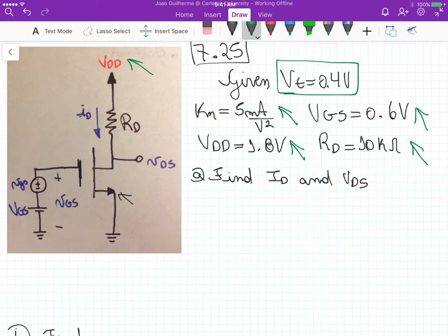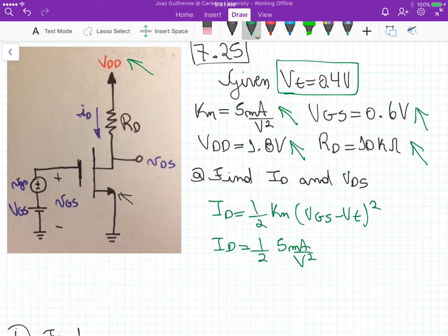Part A asks us to find ID and VDS. For ID, we know that ID equals one-half the device transconductance times the overdrive voltage, VGS minus VT, squared. This gives us ID equals 0.5 times 5 milliamps per volt squared times 0.6 minus 0.4 squared, which gives us an ID of 0.1 milliamps.